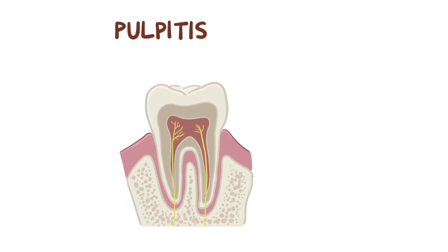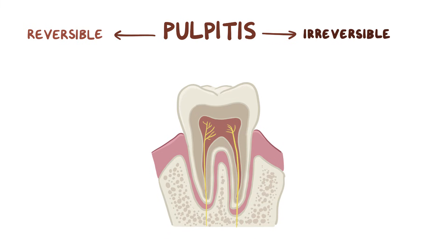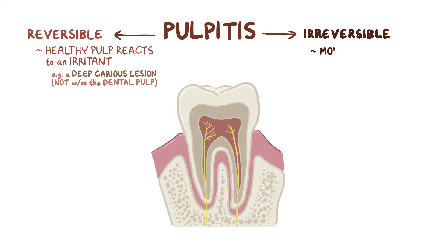Clinically, pulpitis can be divided into two types: reversible and irreversible. In reversible pulpitis, healthy pulp reacts to the presence of an irritant — for example, a deep carious lesion that isn't actually within the dental pulp. Irreversible pulpitis is much more serious because the pulp is actually damaged.